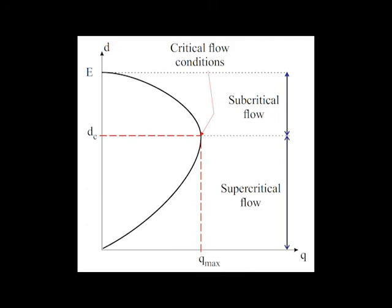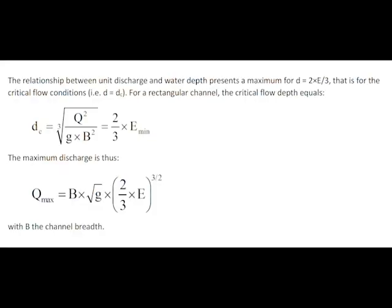The relationship between unit discharge and water depth presents a maximum when the water depth is equal to two-thirds of the specific energy in a rectangular channel. That is for critical flow condition, d equals d_c. For a rectangular channel, the maximum discharge at critical flow condition can then be expressed.